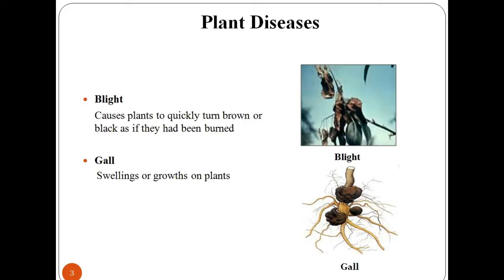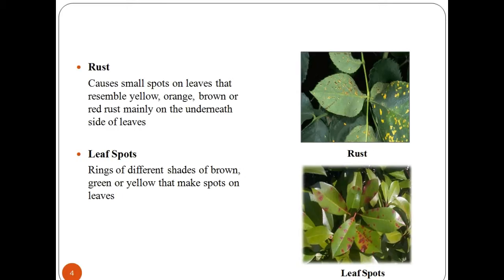Blight and gall are plant diseases, in which blight causes the plant to become black or brown in color and the plant no longer looks fresh. You can see the images for blight and gall diseases. Most often found on mature plants where symptoms appear primarily on the surfaces of flowers and leaves.